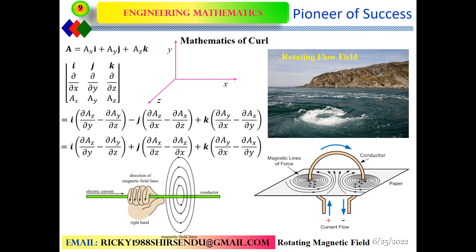Now let us go into the mathematics. Suppose we have a vector A defined in a Cartesian coordinate system with x-axis, y-axis, and z-axis. A has components Ax, Ay, and Az, with i, j, and k as unit vectors along x, y, and z directions. To find the curl of vector A, you take the determinant with i, j, k in the first row; the operators ∂/∂x, ∂/∂y, ∂/∂z in the second row; and the components Ax, Ay, Az in the third row.